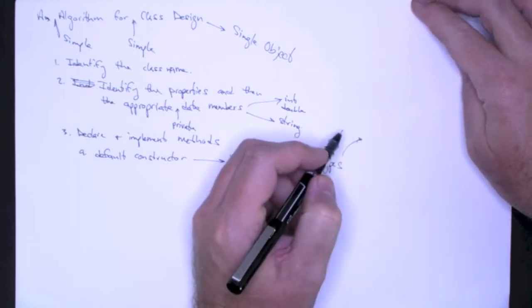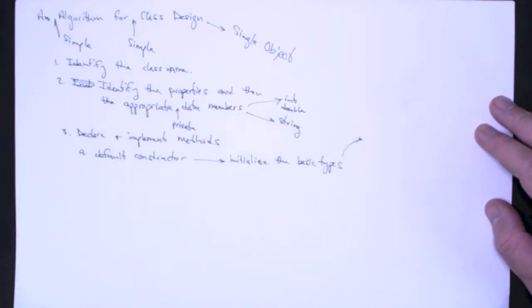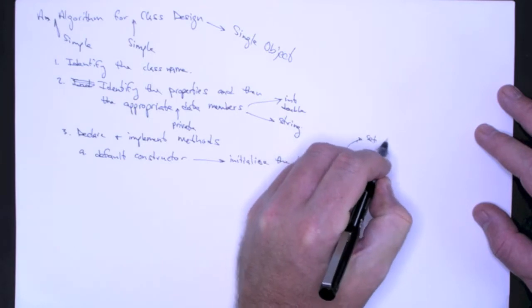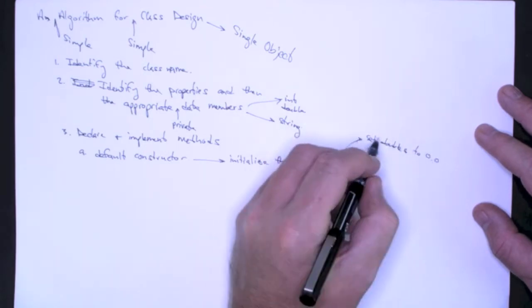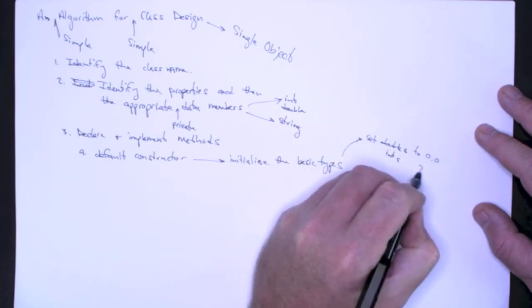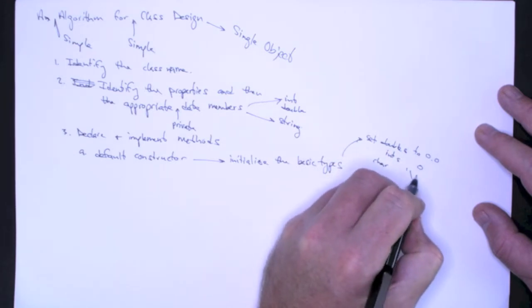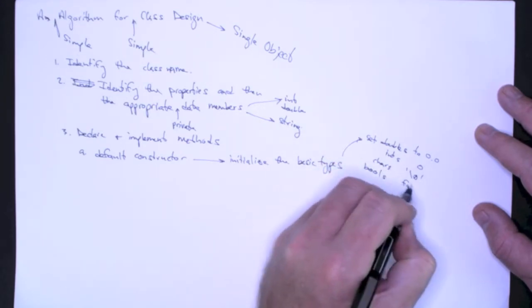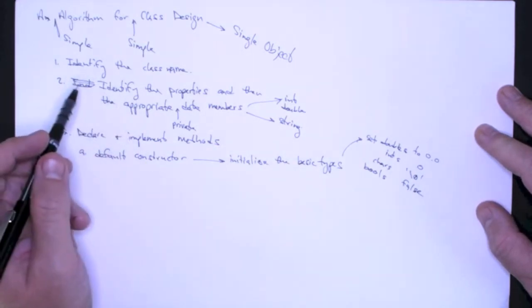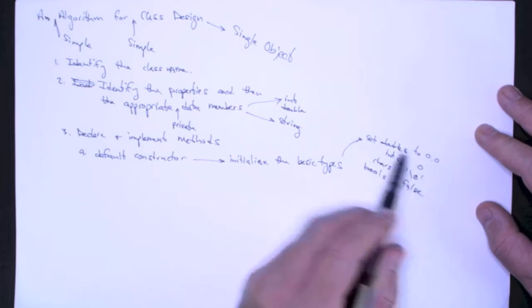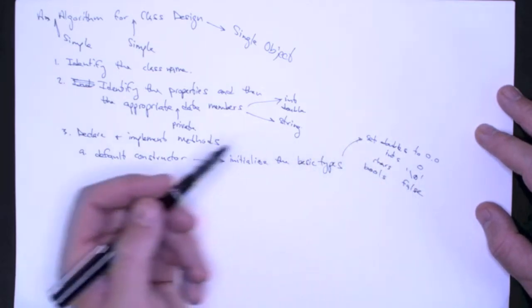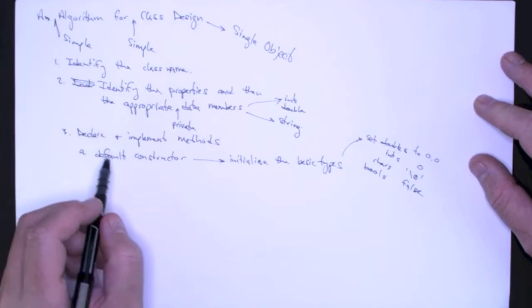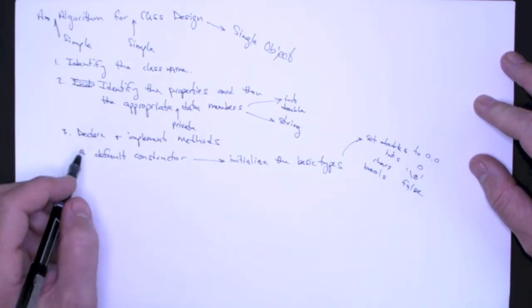So it must initialize the basic types. And just as a general rule, what should these values be? Not knowing what class we're talking about, the only thing I can really say is set doubles to 0.0, set ints to 0, set characters to maybe the null character, and set bools to false. Now, if you tell me something about the class you're defining, I may change this. Maybe 1 is a better default value. So it really depends, but not knowing anything about the class, I would say that these would be reasonable default values for any of the basic types, and the default constructor should do that.